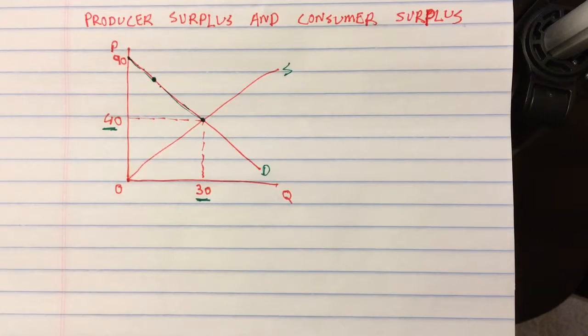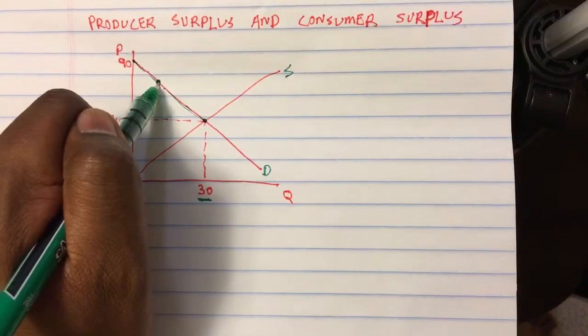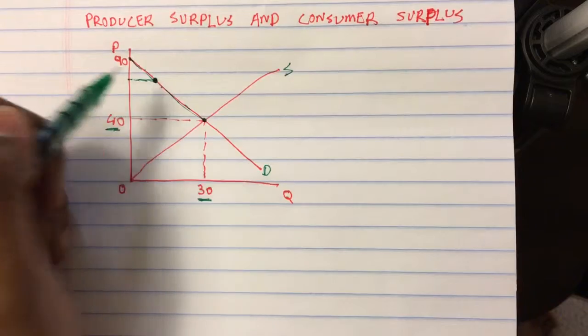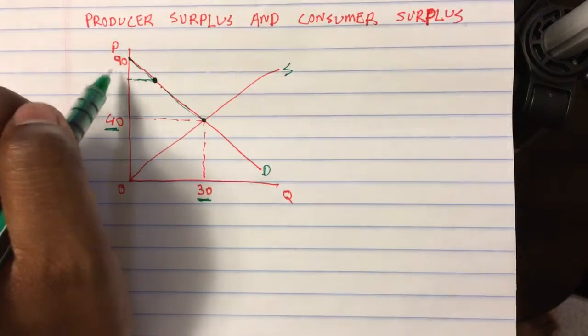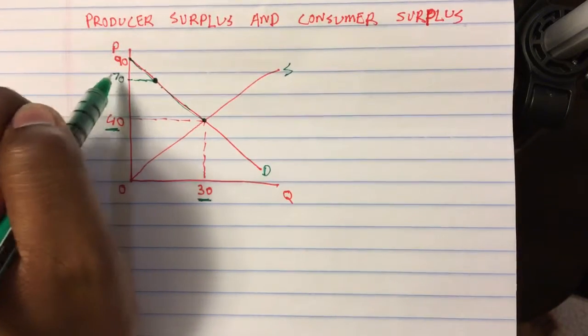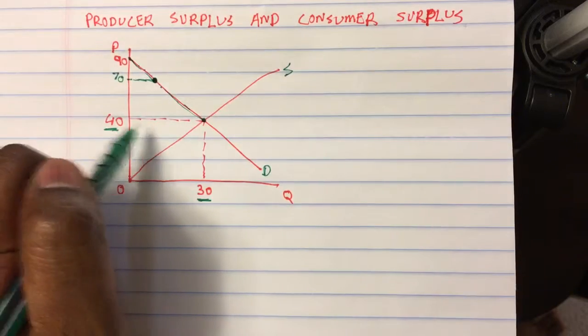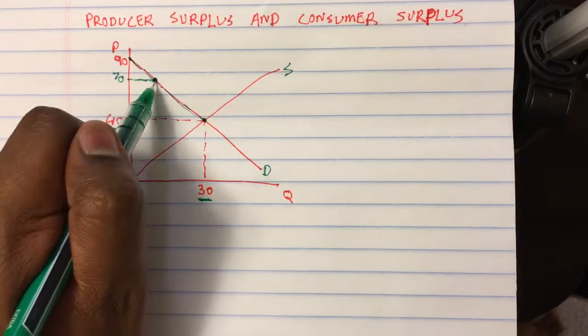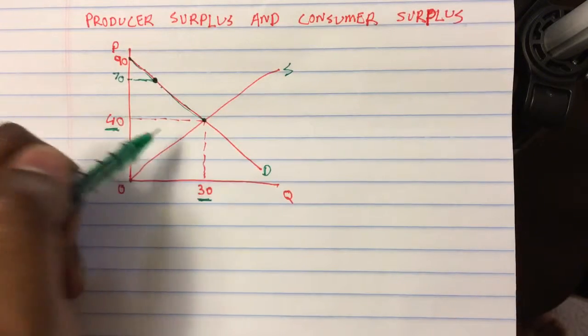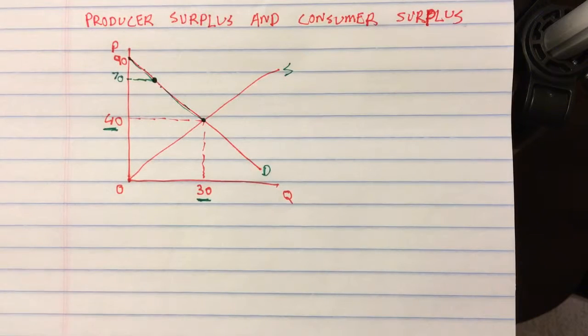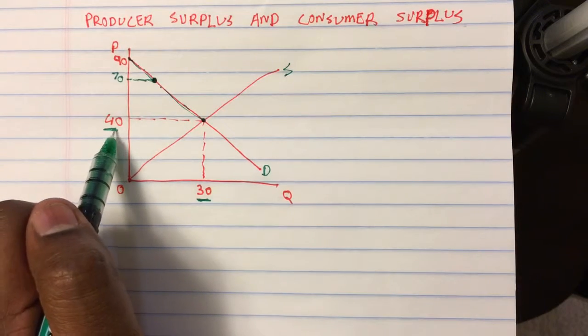Now in that case, if I want to measure this person, let's say this person's willingness to purchase the product is 70. That means that this person is going to pay up to $70 to purchase this product. Now this person is able to purchase it for $40. That means that this person feels like he has gained $30 by purchasing the product because he would have paid or she would have paid $70 for this product, but instead it's only costing this person 40.